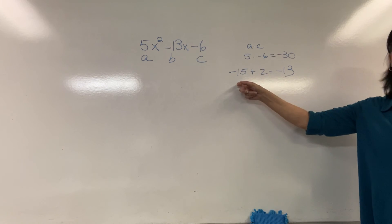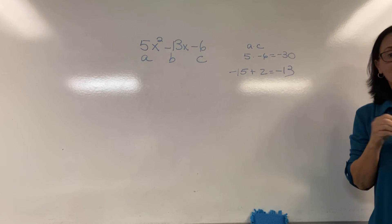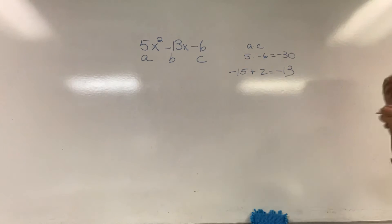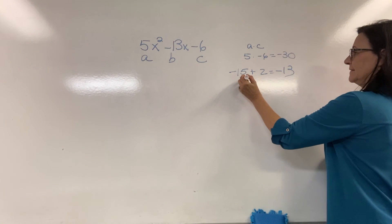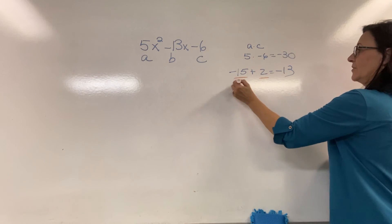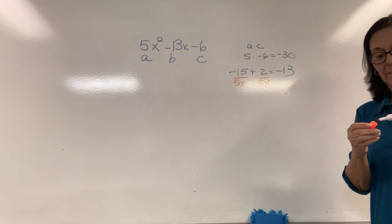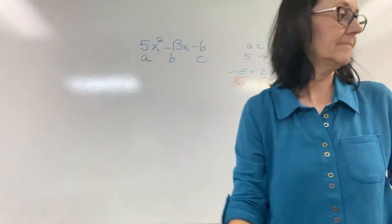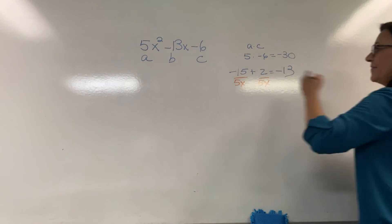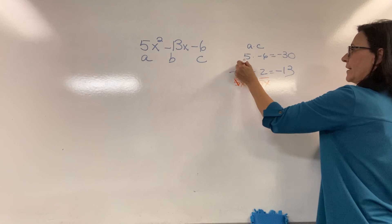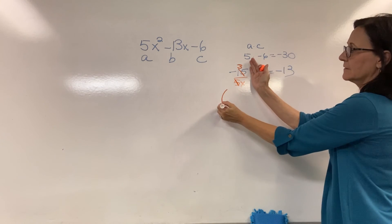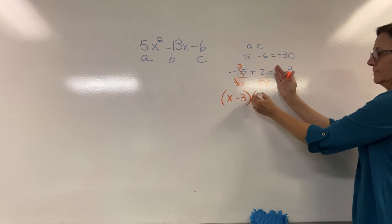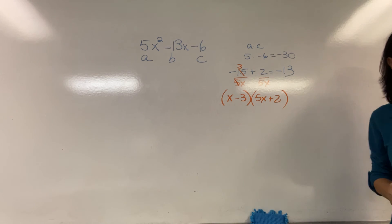Negative 15, positive 2. What's the next thing I do? You put negative 15 and positive 2, 5x under both of them. The top form would be negative 3. That becomes 1. That becomes negative 3. And so what's that factor? x minus 3. And then that would be 5x plus 2. Yes.